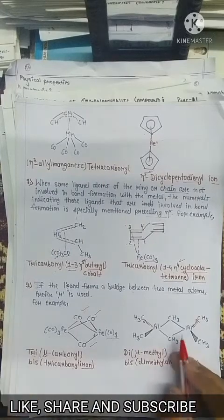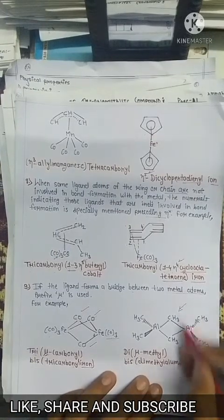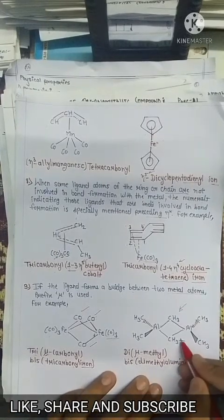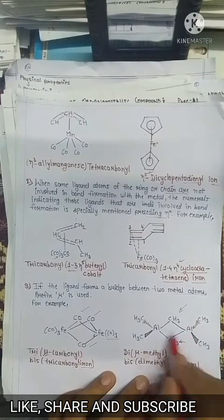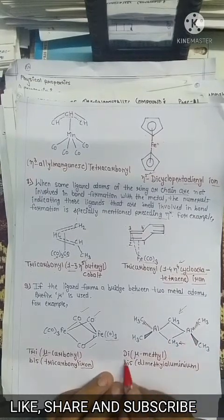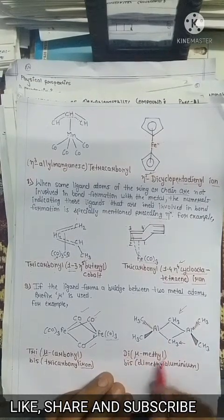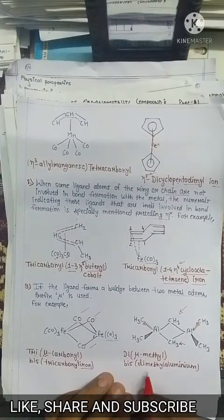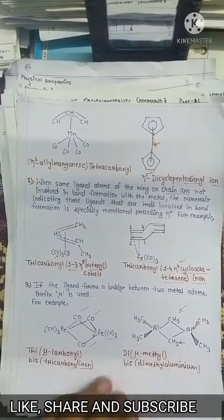Here, this methyl group and this methyl group form a bridge between two aluminium atoms, so the name is di-μ-methyl, base 2, dimethyl aluminium.